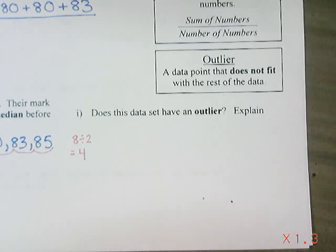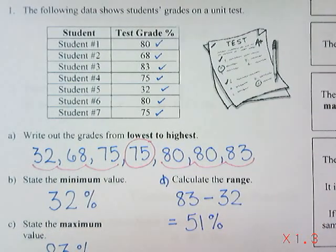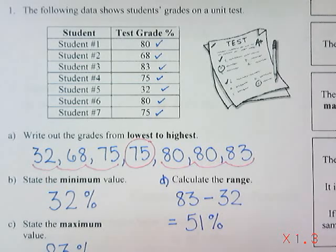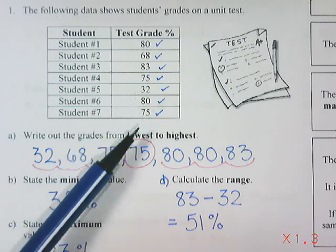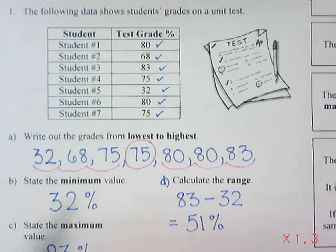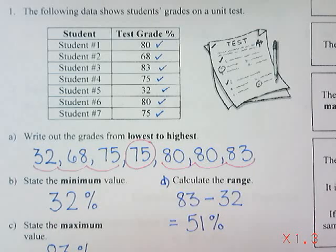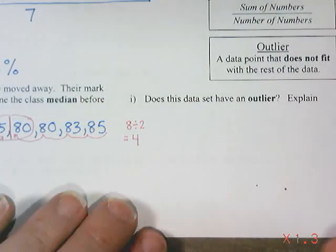We have one more question: does this data set have an outlier? An outlier is a data point that does not fit with the rest of the data — either way higher or way lower than the other numbers. Looking at the seven students, 32% for student number five is quite a bit lower than all the other numbers. 83 is not much higher than 80, which is not much higher than 75, which is not much higher than 68, but 32 is pretty far from those others.